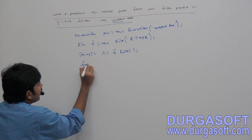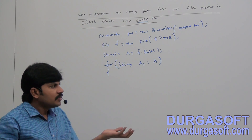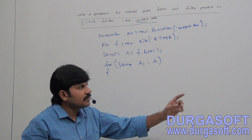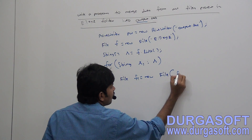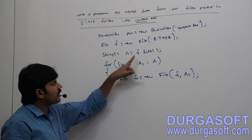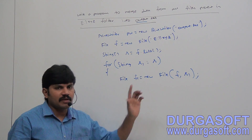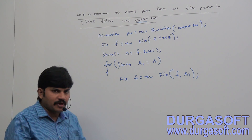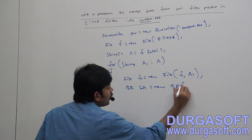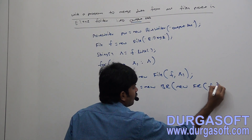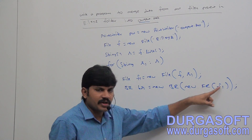Now for every file name — for each String s1 in s — for the first file name, what we have to do? Create a File object to represent that file: File f1 = new File(f, s1). Because s1 is available inside E:\xyz. In this subdirectory, with whatever name we have, create a file object. Now I have to read the data from this file. Which reader is best? BufferedReader. BufferedReader br = new BufferedReader(new FileReader(f1)). Whatever file name we have.